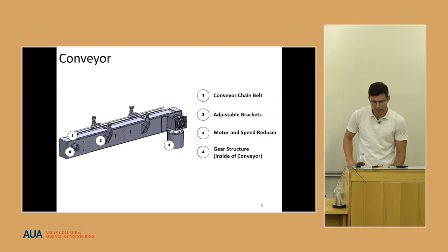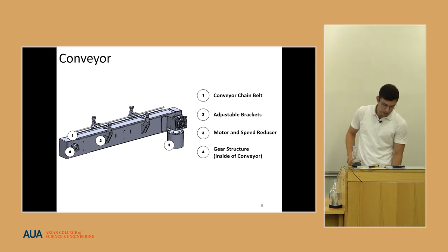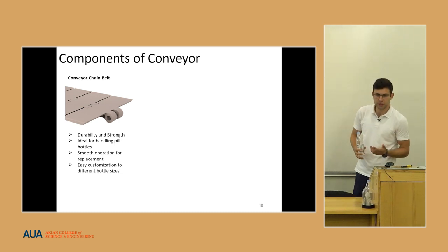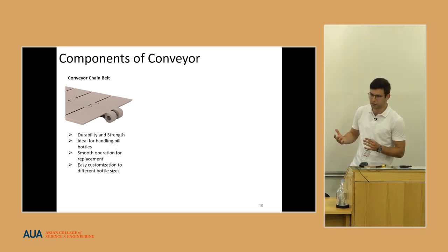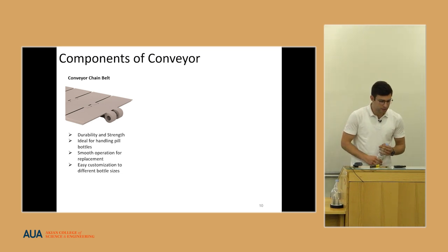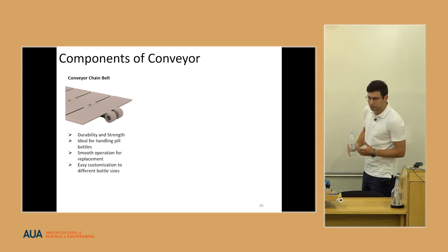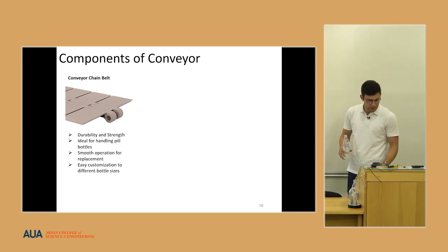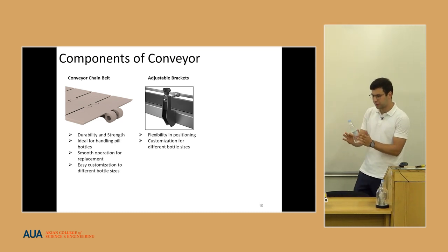The conveyor itself consists of the conveyor belt chain, the adjustable brackets, a motor and speed reducer, and the gear structure which we cannot see here because it is implemented inside of the conveyor. I use the plastic chain belt for these pharmaceutical bottles because it offers multiple benefits. First of all it is durable and ideal for handling the pill bottles, and it has smooth operation for replacement with no vibration, no displacement, and it is easy to customize for bottles with different sizes.